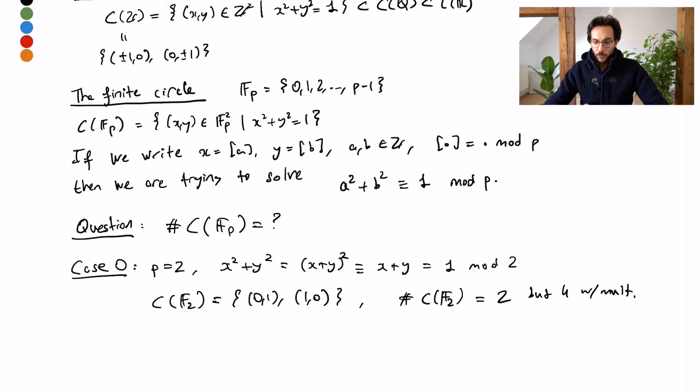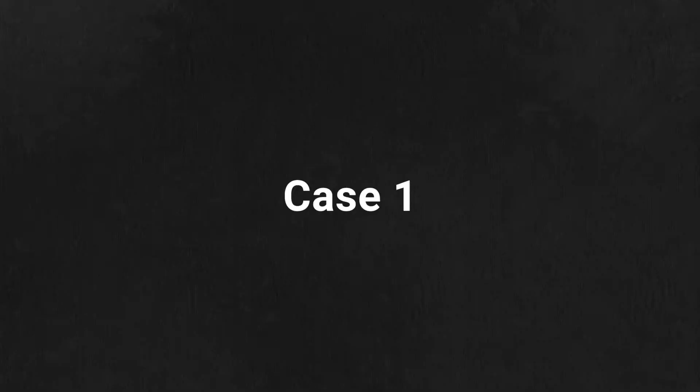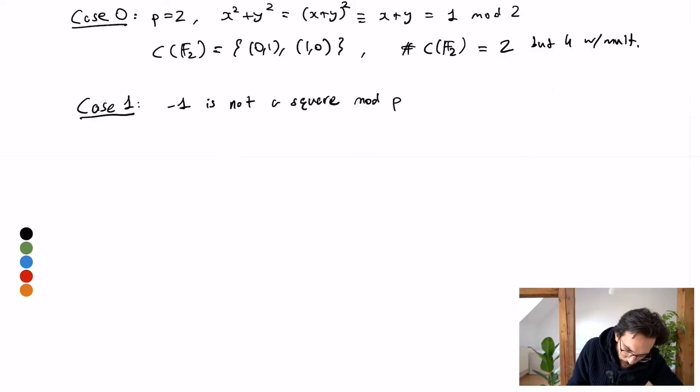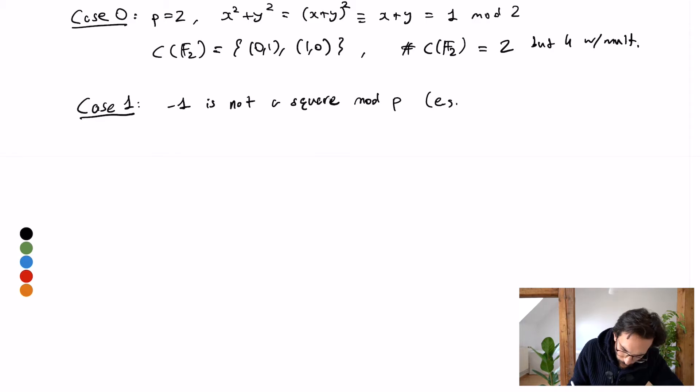Okay, now let's move on to the more interesting cases. Now case 1 will be the cases where minus one is not a square residue of an integer. For example, p equals five would not work because minus one is four and four is evidently a square, whereas p equals three is okay.